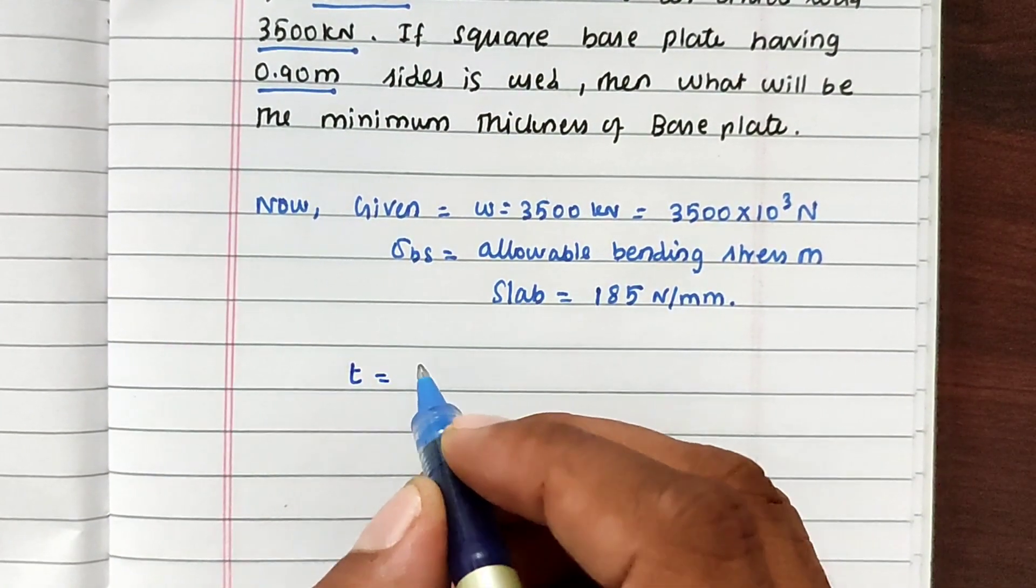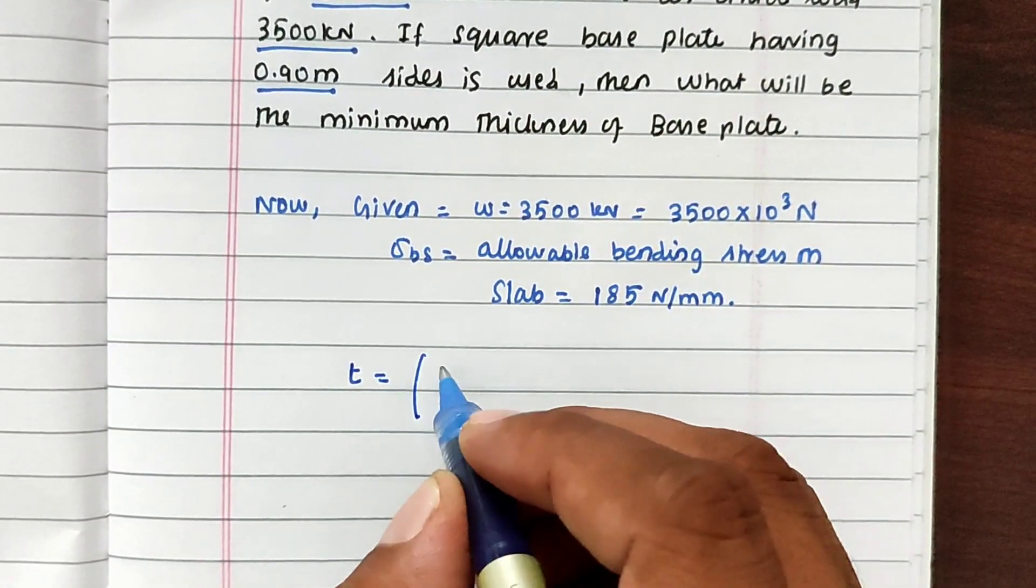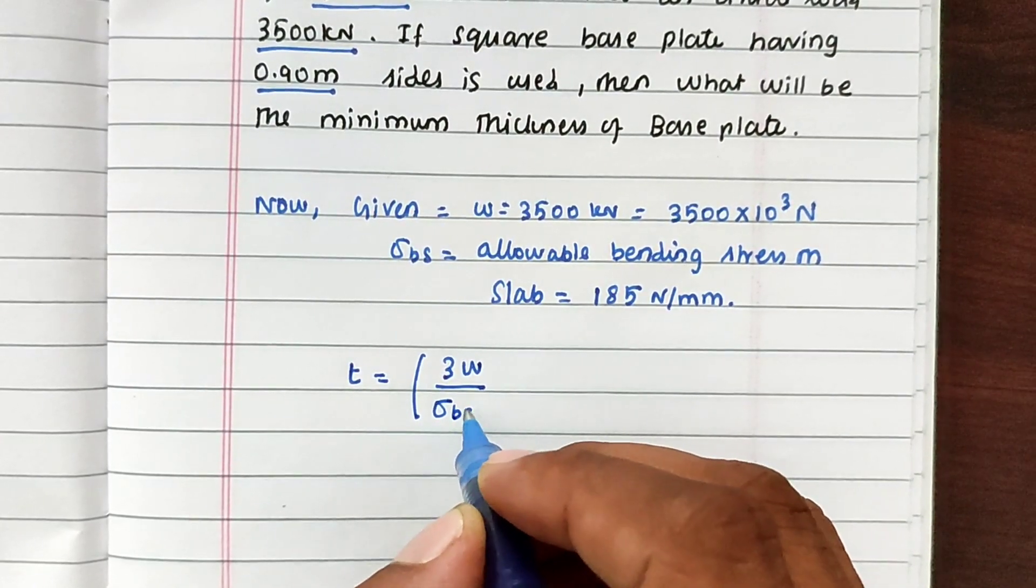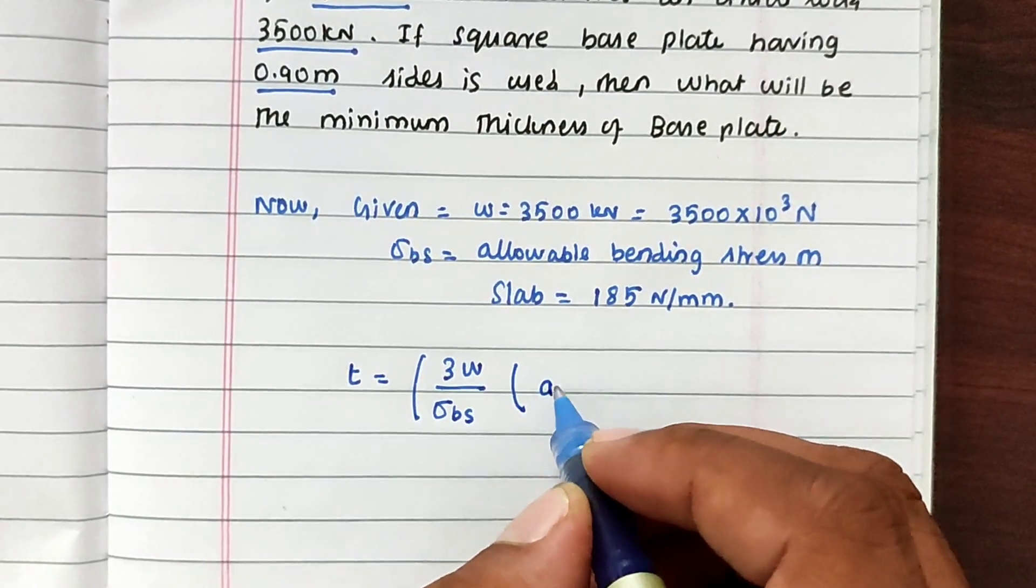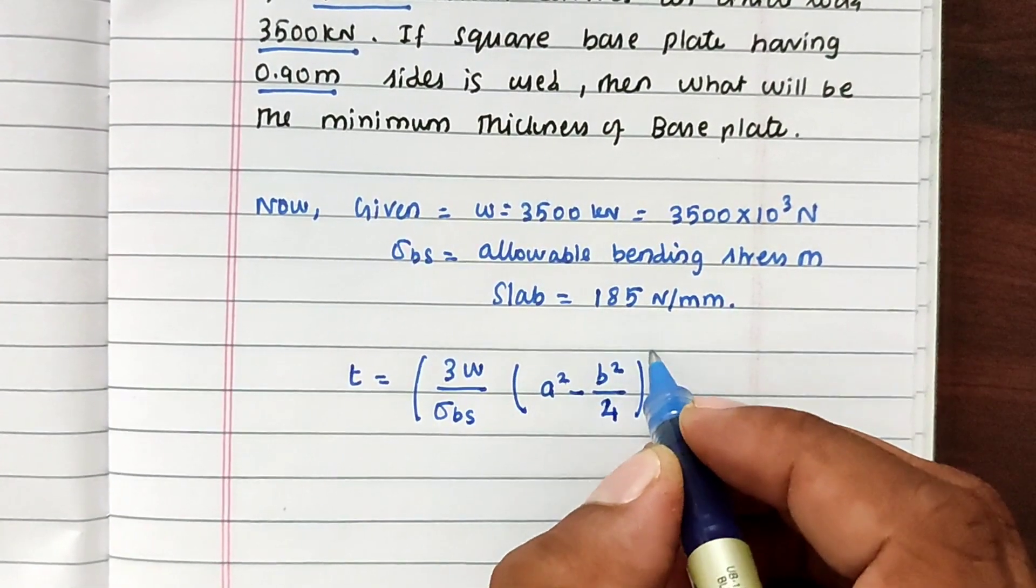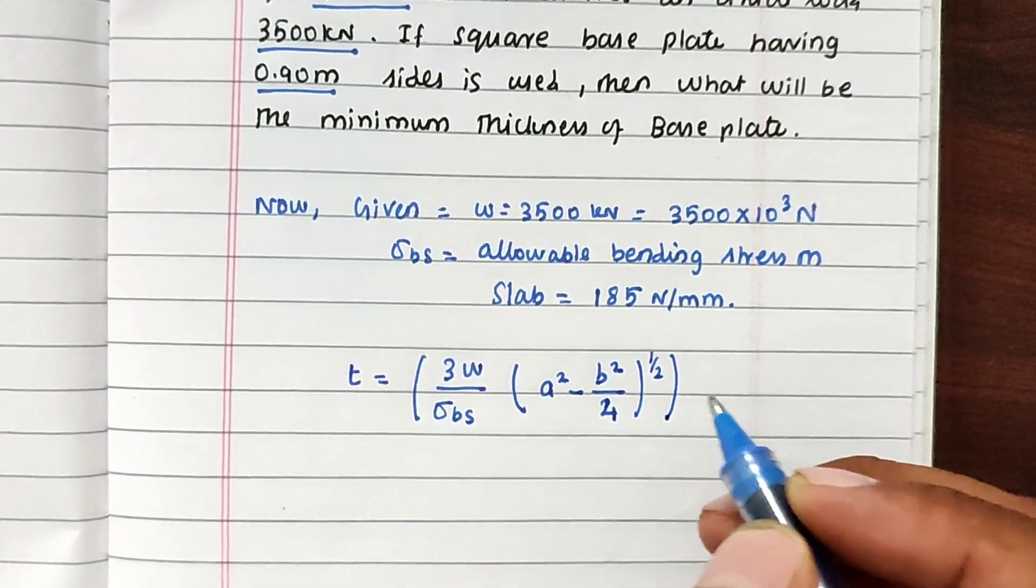The formula: T equal to 3W divided by Sigma BS into quantity A square minus B square divided by 4, whole power 1 by 2.